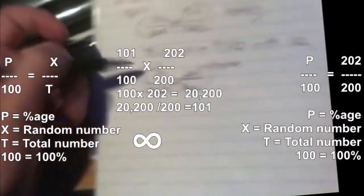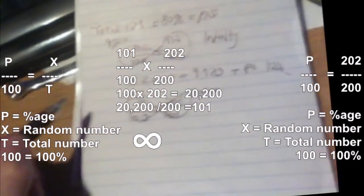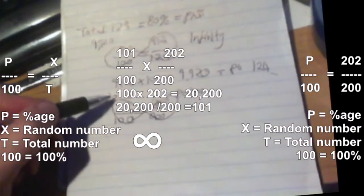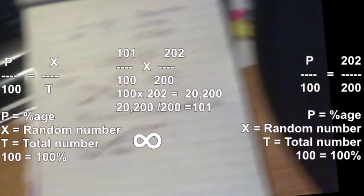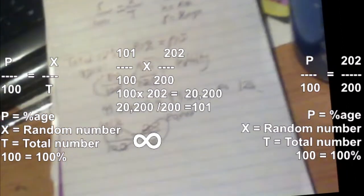Which is correct, because 202 is more than the total, so it's going to be more than 100 percent. It's 101 percent. So can we check this?